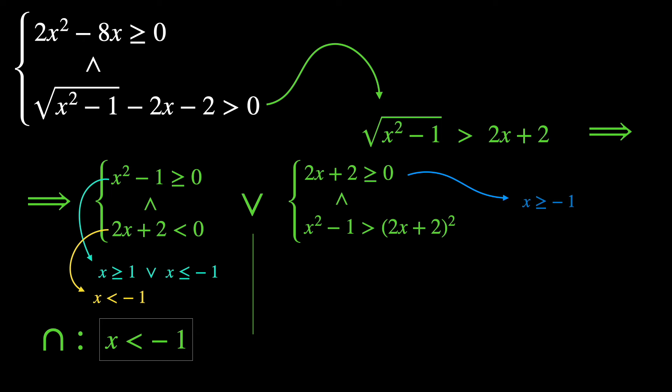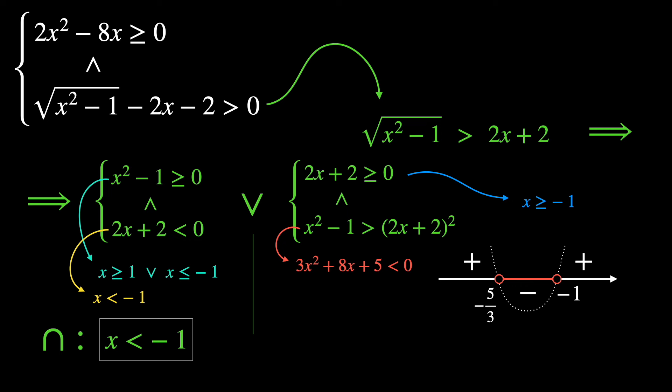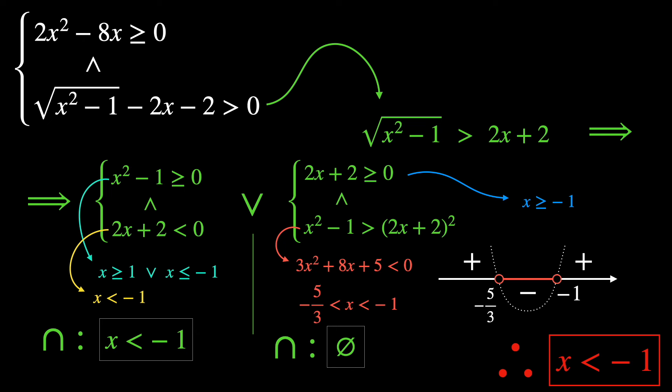In the second system, the first condition gives x ≥ −1, and the second is a second-degree polynomial. Finding its roots, the parabola is negative for x between −5/3 and −1. Performing the intersection of these two results gives the empty set. So only the first system gives relevant information — the union of x < −1 and the empty interval is simply x < −1.